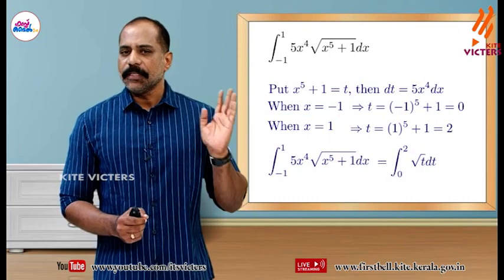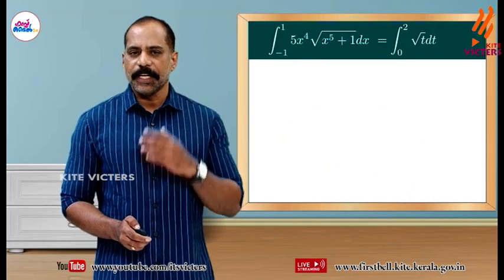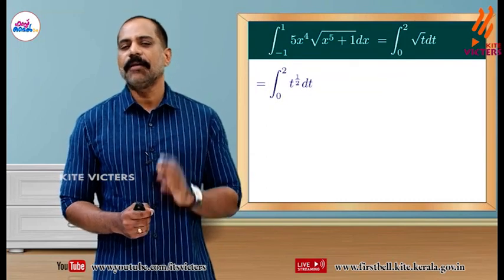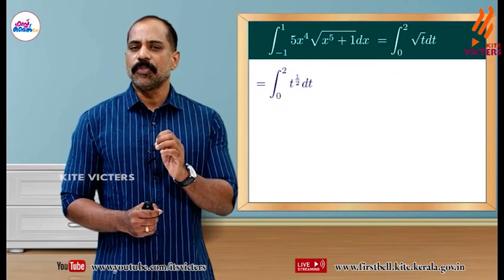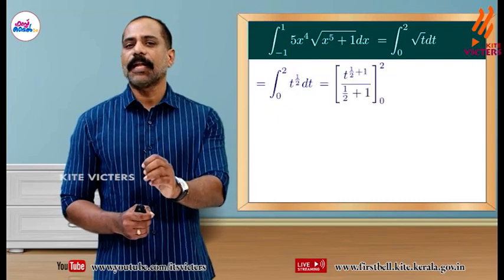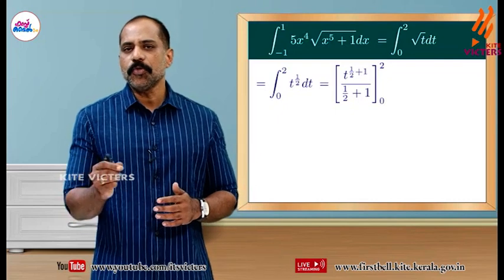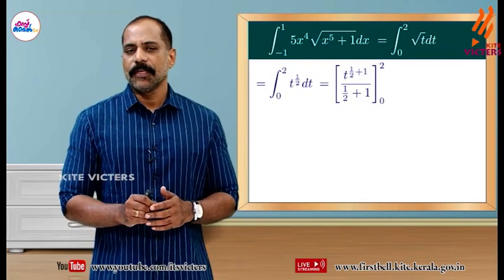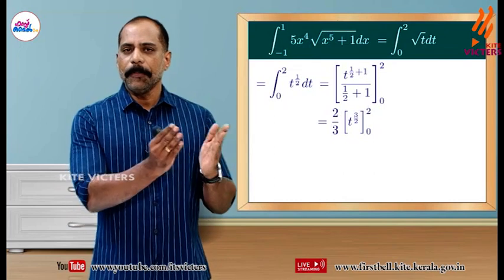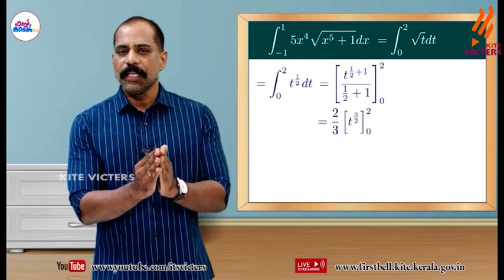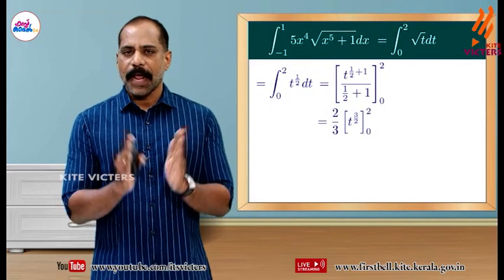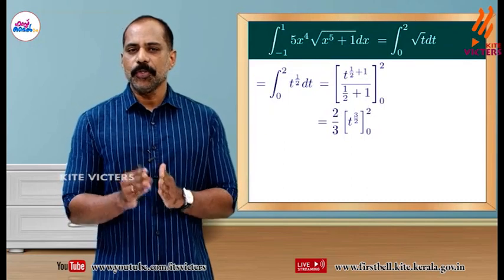Root t is t raised to 1 by 2. Using the method of integration, t raised to n integrates to t raised to n plus 1 divided by n plus 1. So n equal to 1 by 2 gives t raised to 3 by 2 divided by 3 by 2, with limits 0 to 2.